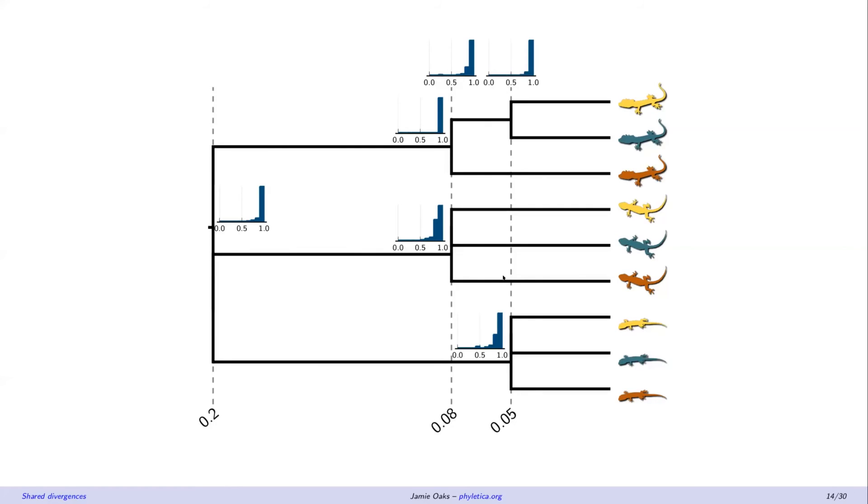We're seeing very good high posterior probabilities across all the simulations for our polytomies and for actually inferring these shared divergences. What this is showing up here is the posterior probability of correctly inferring the shared divergence times exactly, so these exact nodes sharing this time.